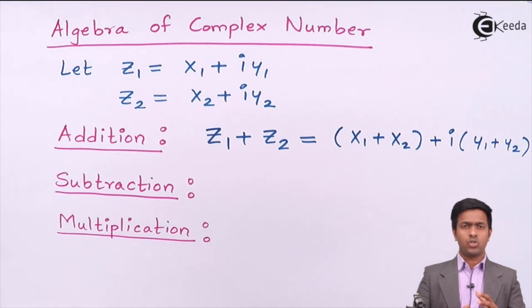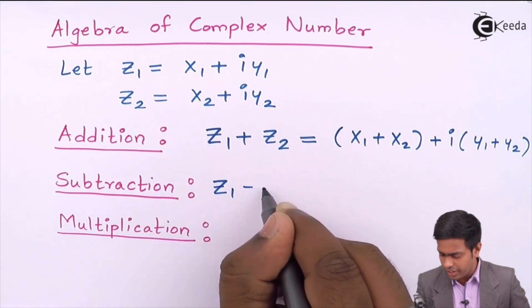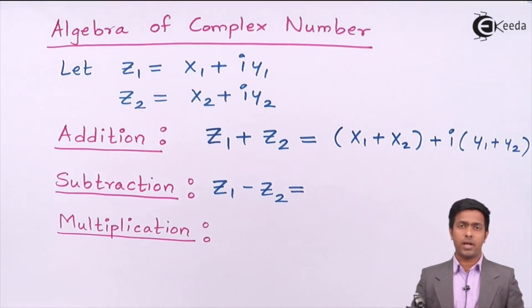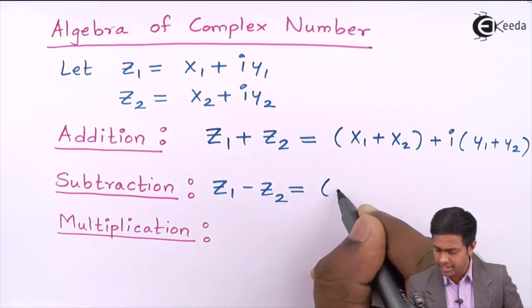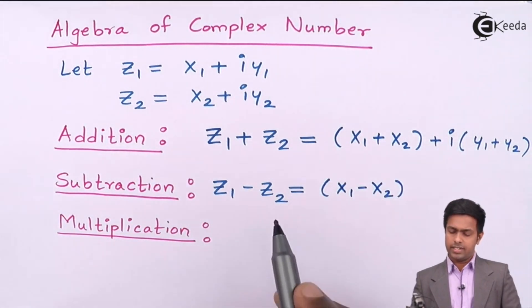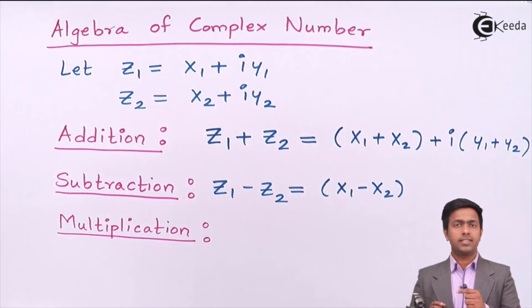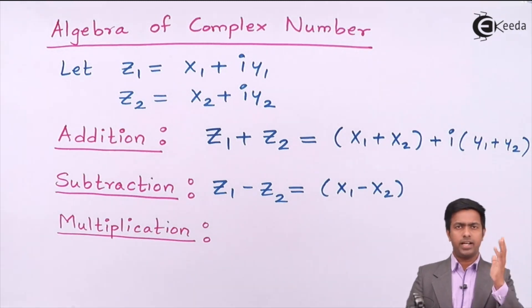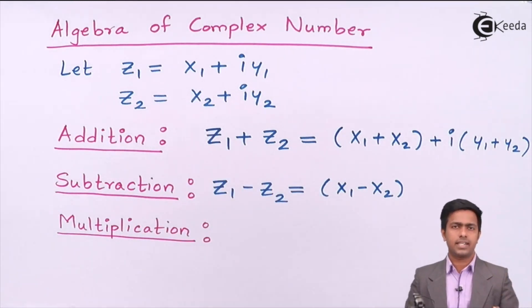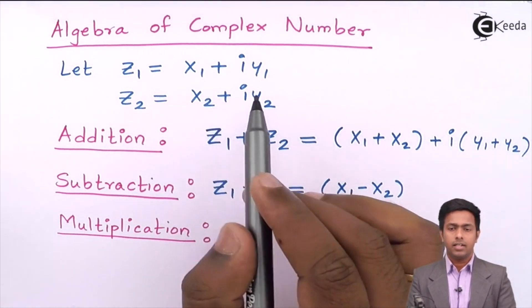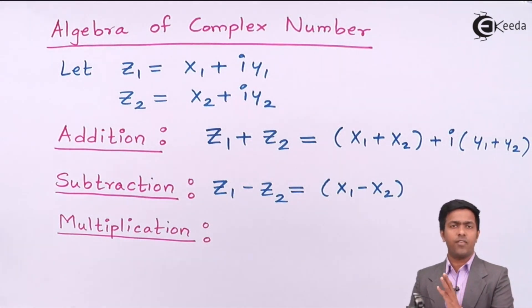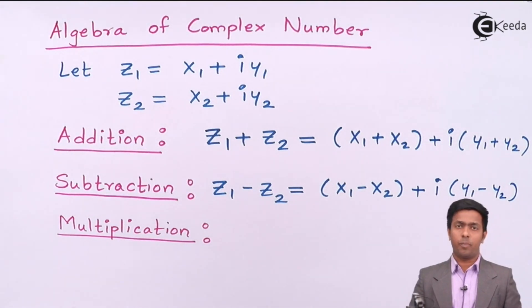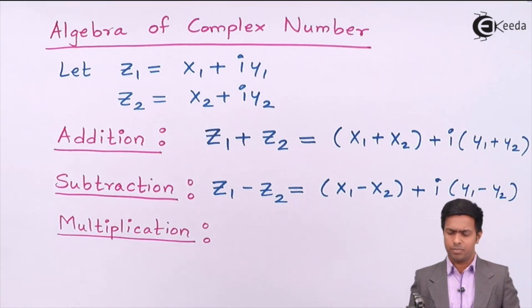Subtraction is done in a similar way. To find z1 minus z2, we subtract the real part from the real part and the imaginary part from the imaginary part. So we get (x1 minus x2) for the real part. Note that if you subtract z1 from z2, you get x2 minus x1. For the imaginary part, we get i·y1 minus i·y2, which gives i(y1 minus y2). This is the subtraction of two complex numbers.